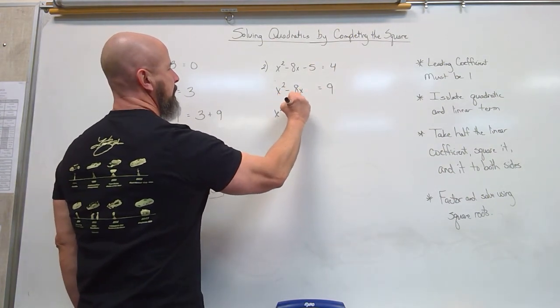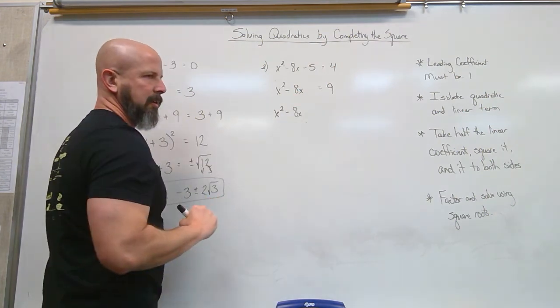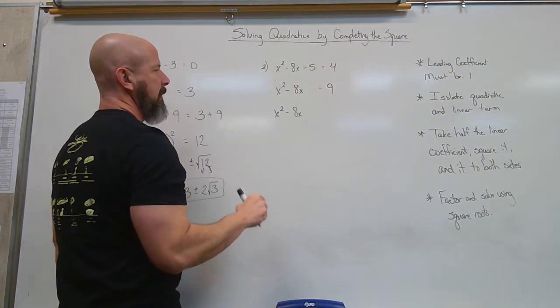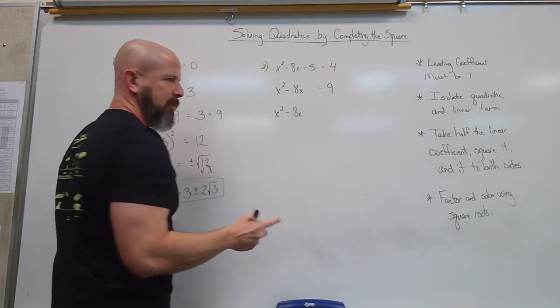Now we're going to take half the linear term. So half of 8, linear coefficient, squared is 16. Add to both sides.